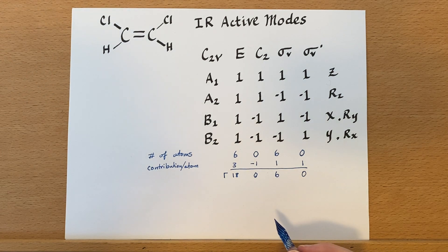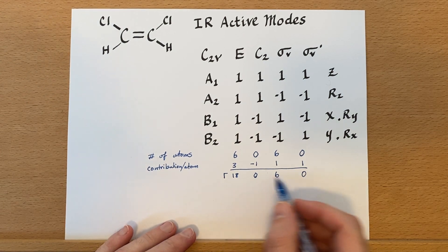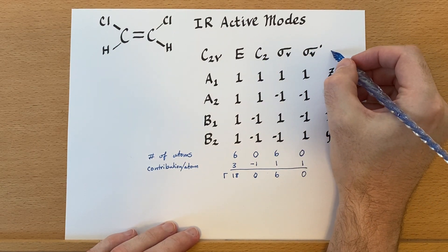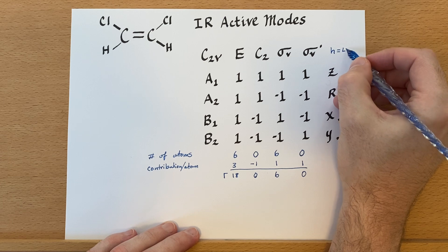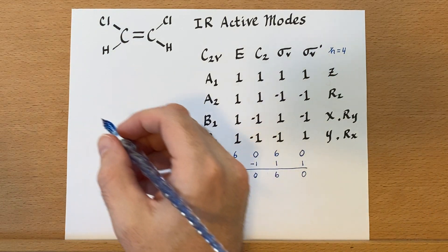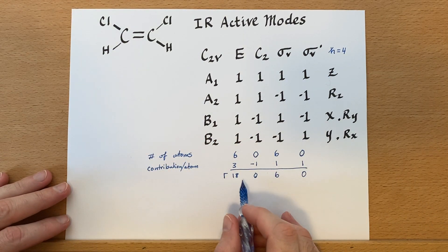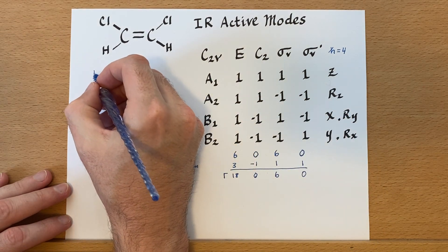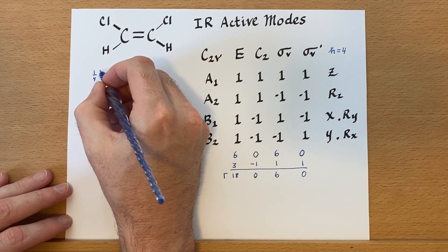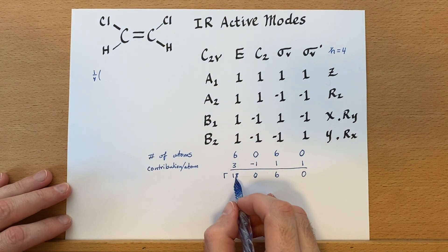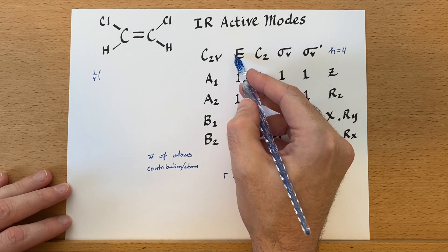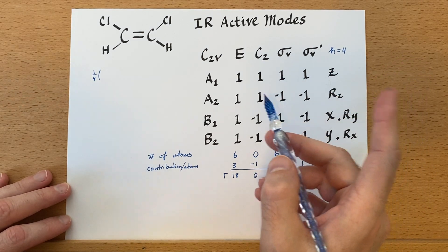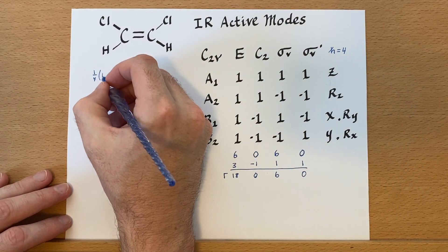And now we go through the process of reducing this representation. The order of this group is four. So, 18 times one. Let's see here. One-fourth. Start at the beginning. Times 18, times one, times one. But all of these are one. So, again, I'm going to be a little lazy on that and kind of skip that step.